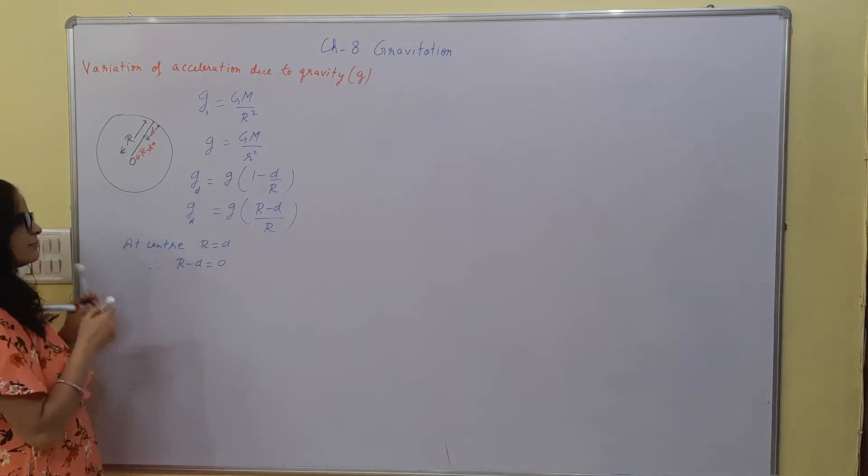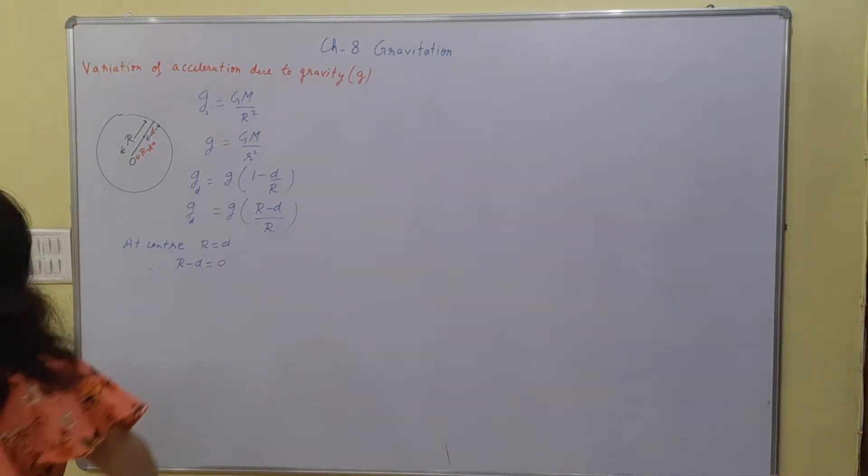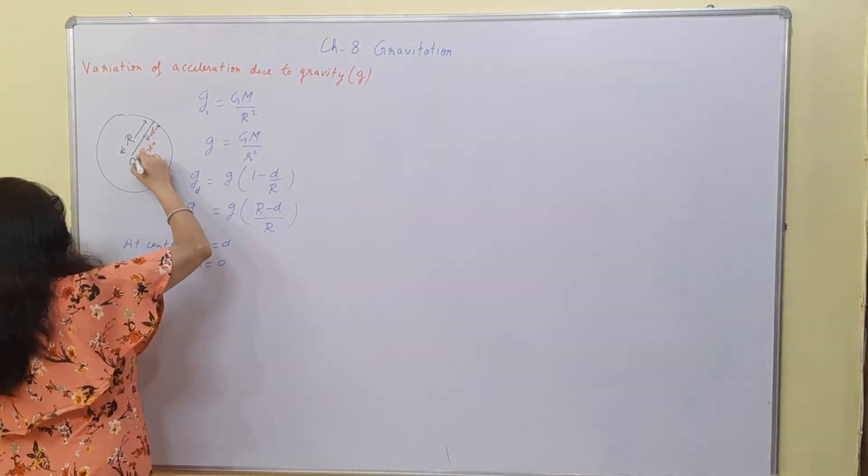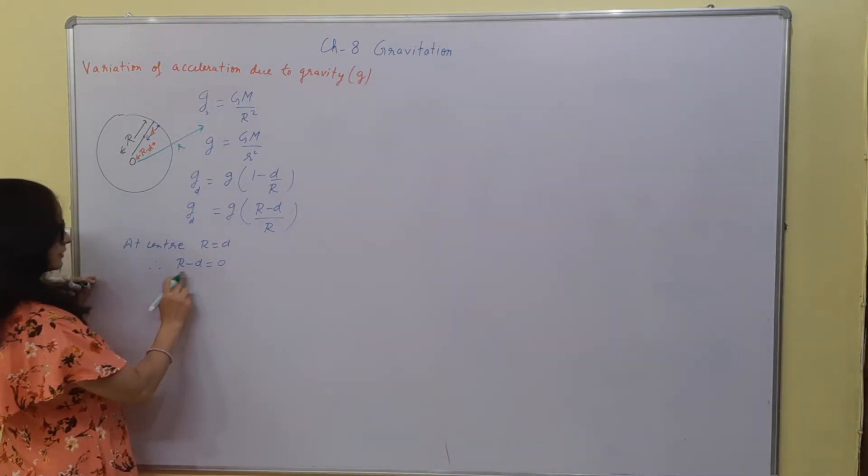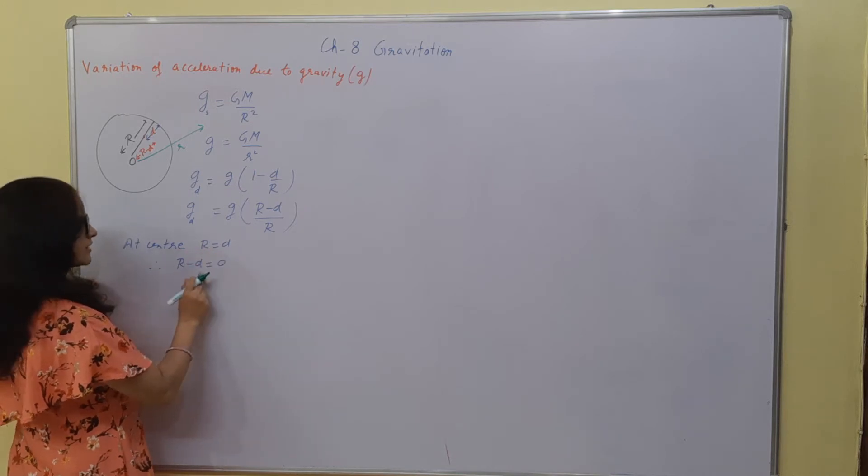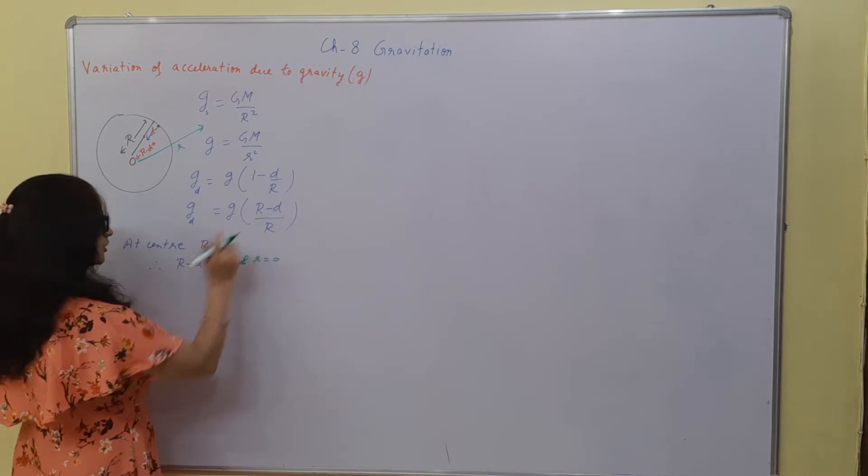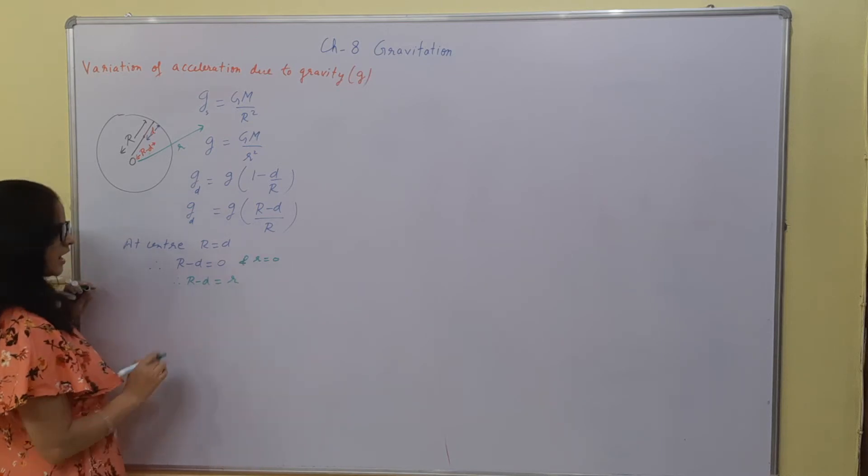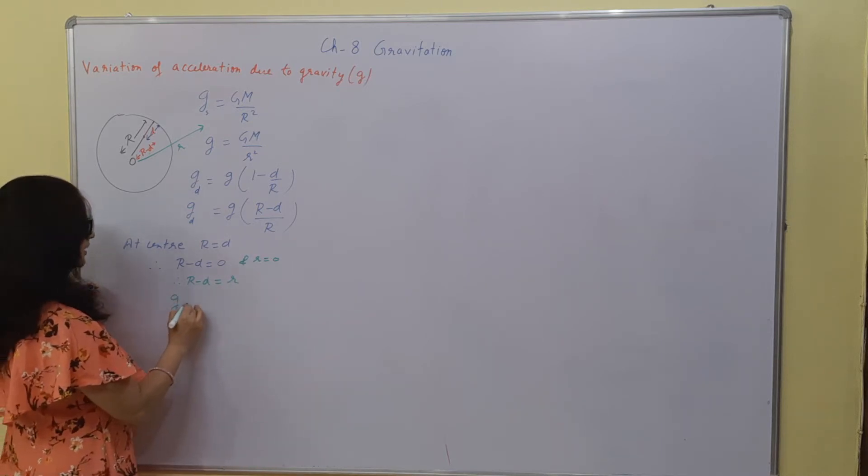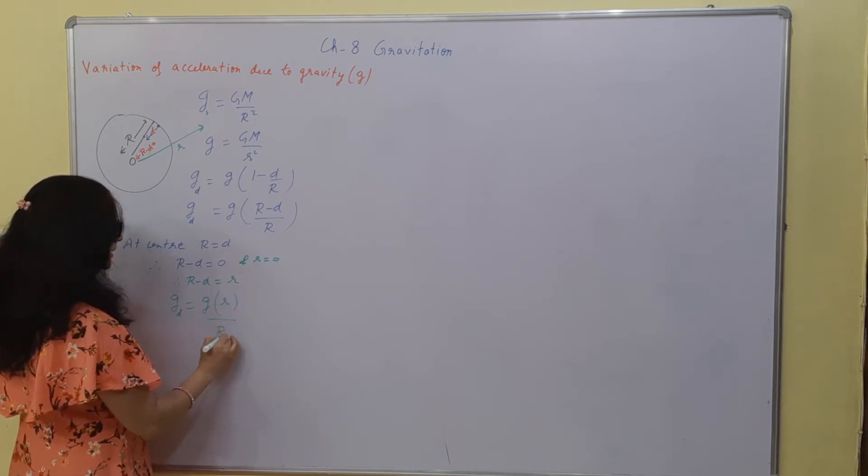If I am measuring the distance from the center as increasing distance from the center, at center r equals d, so r minus d is 0. Therefore r and also r is 0, so I can put this r minus d as r. So g_d can be written as g_d into small r upon capital R.